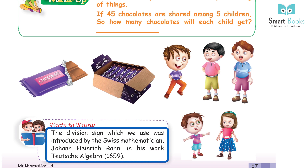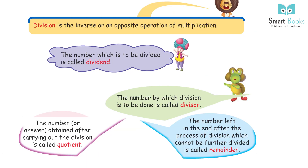Facts to know: the division sign which we use was introduced by the Swiss mathematician John Heinrich Rahn in his work 'Teutsche Algebra' in 1659.